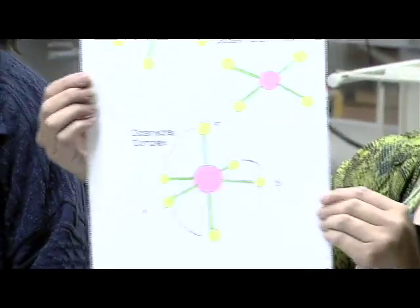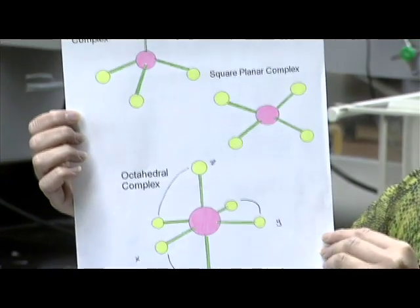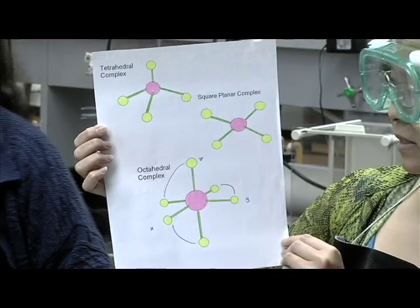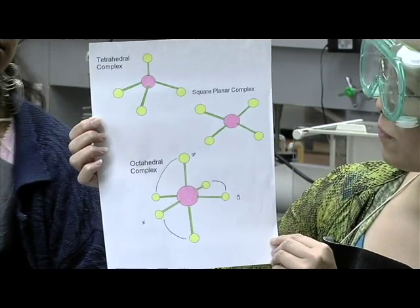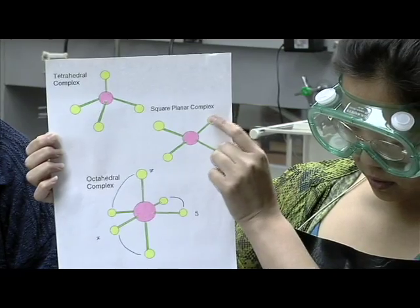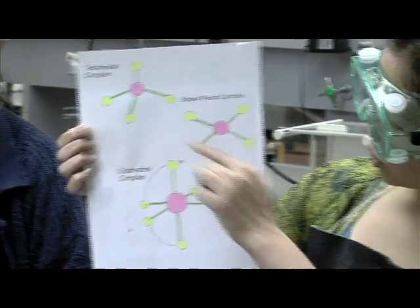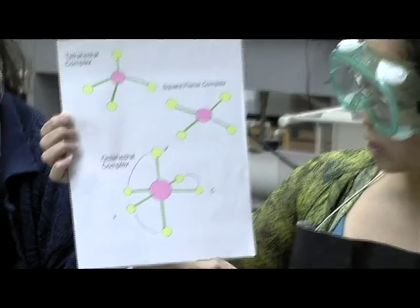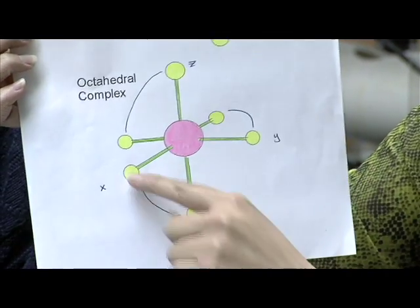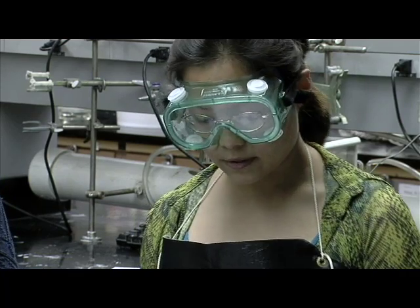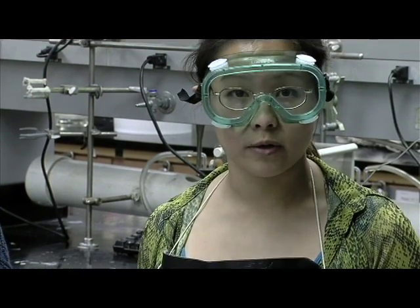Complexes can take on different shapes, as seen here. They have different coordination numbers. Tetrahedral complexes and square planar complexes have coordination numbers of four, which just refers to the number of ligands attached to the central metal ion. Octahedral complexes have coordination numbers of six. Because the chelating agent is attached to a metal ion by several bonds, chelates tend to be more stable than complexes formed with only monodentate ligands like water.